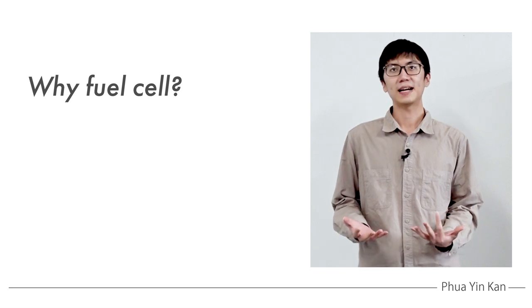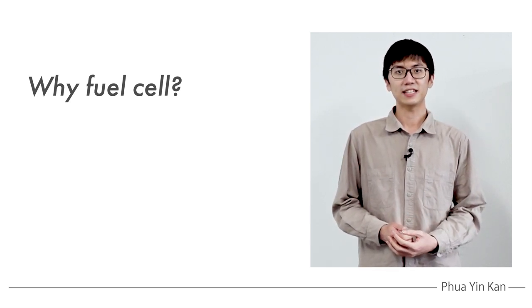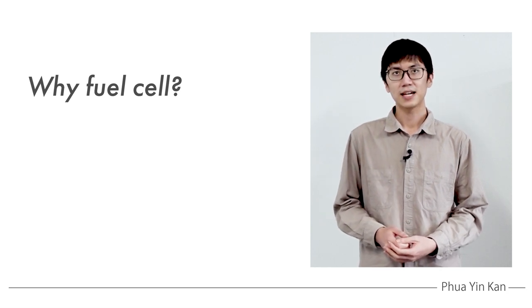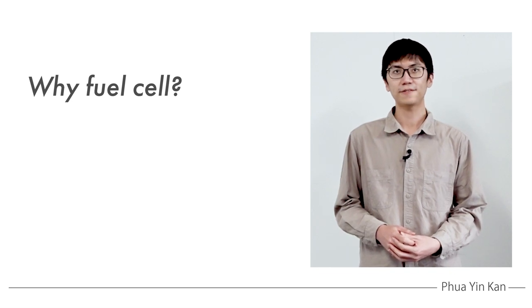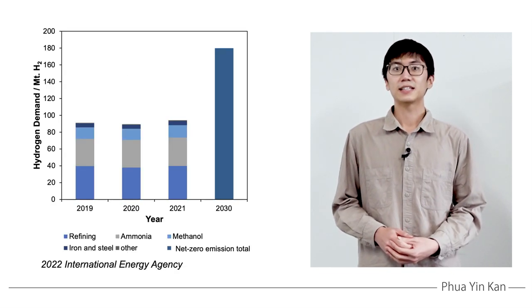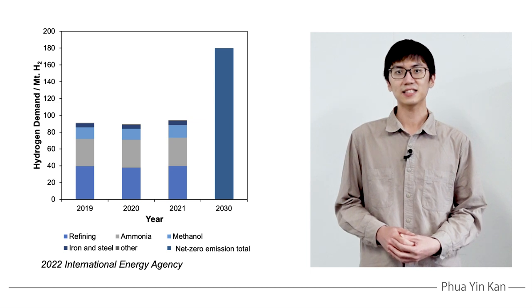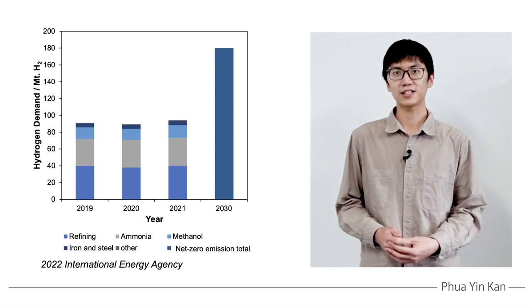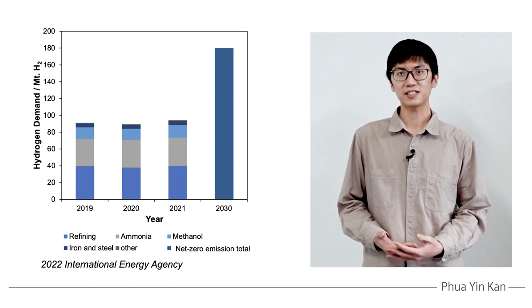Why fuel cell, you might ask? The easy answer is that it emits zero greenhouse gases and has high efficiency, making it an ideal power generator to achieve an energy-sustainable society. The gas that fuel cells use for power generation, which is hydrogen, is expected to double in demand towards 2030 when compared to current standards, thereby signaling its growing attention.